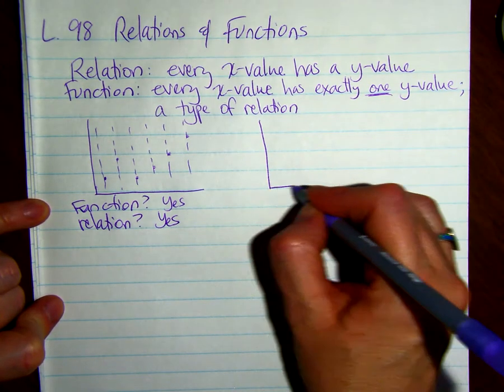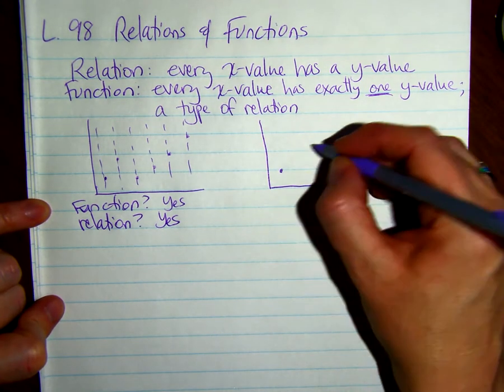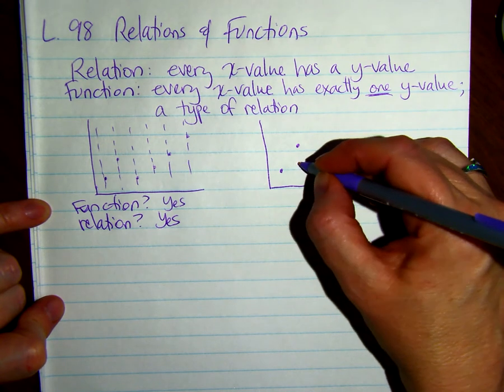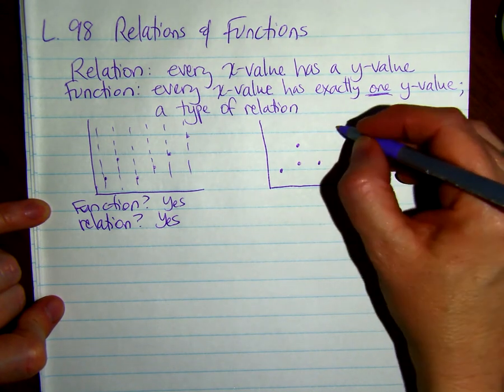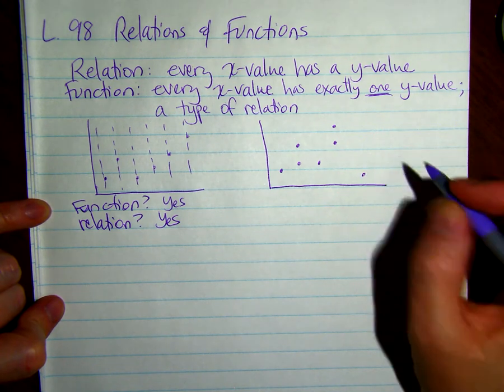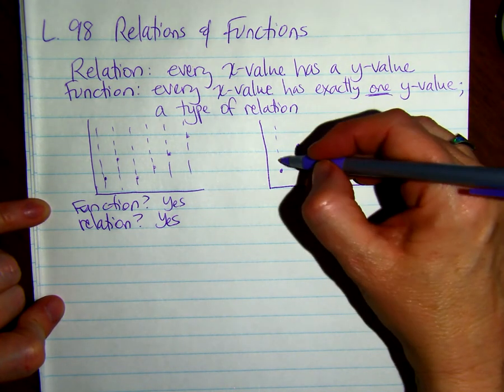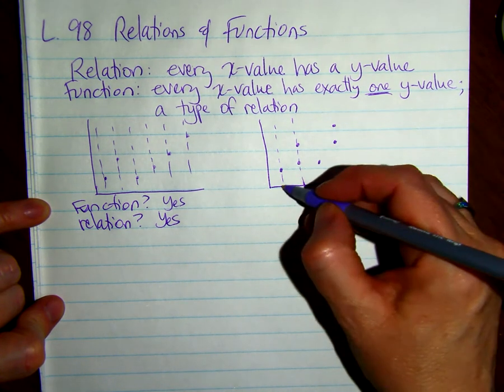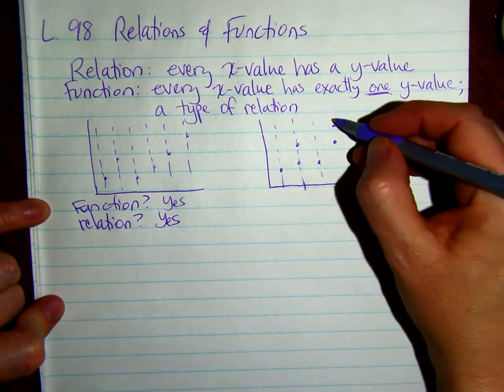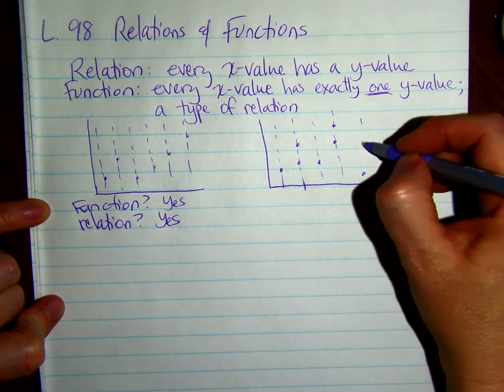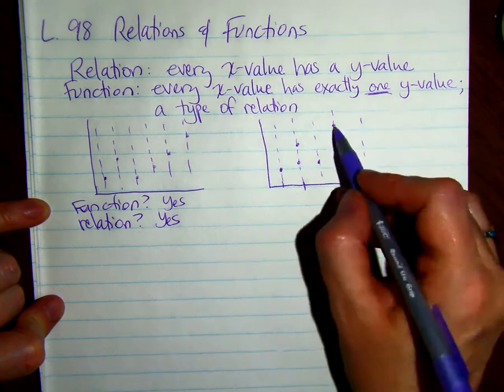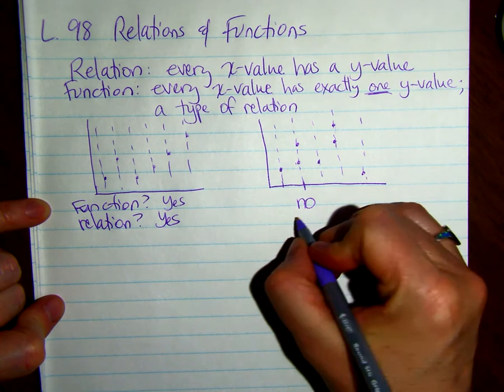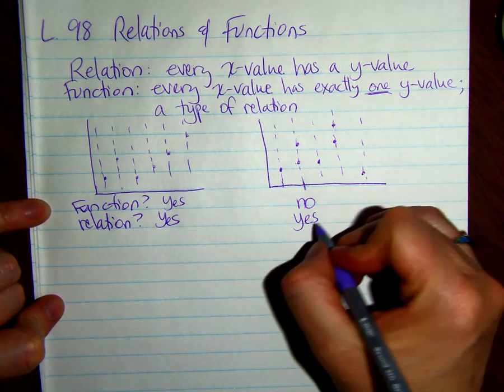Here's another example. So if we draw a vertical line through here, remember we can only go through one point. Every x has exactly one y. Notice these two lines right here go through two points. So it is not a function, but it is still a relation.